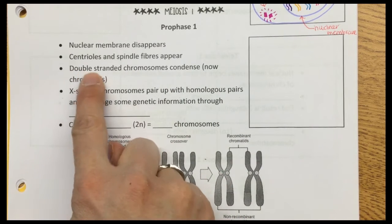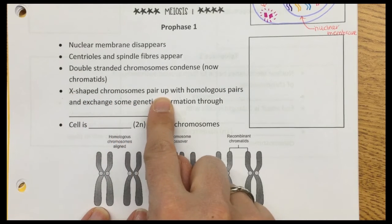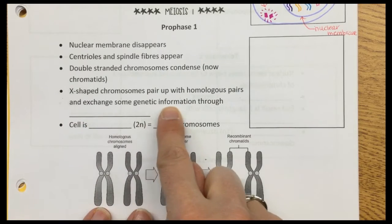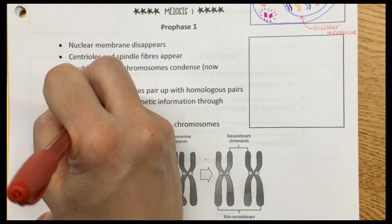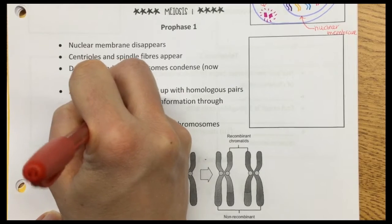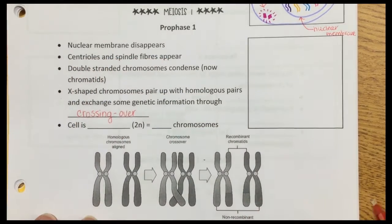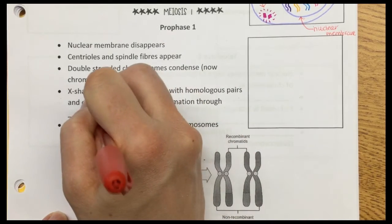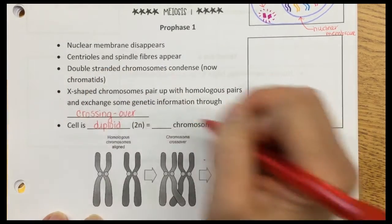These x-shaped chromosomes, or double-stranded chromosomes, pair up with homologous pairs and exchange some DNA through crossing over. This process is so neat. The cell is diploid, so now it has 46 chromosomes.